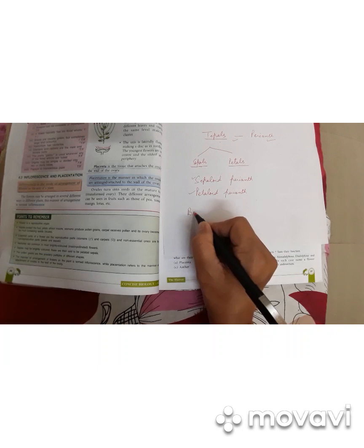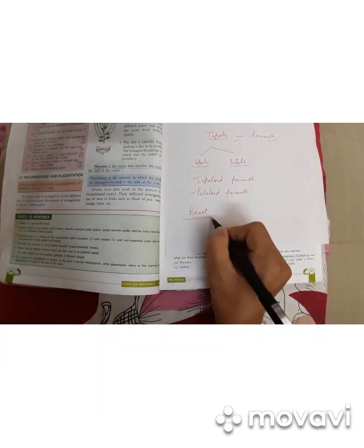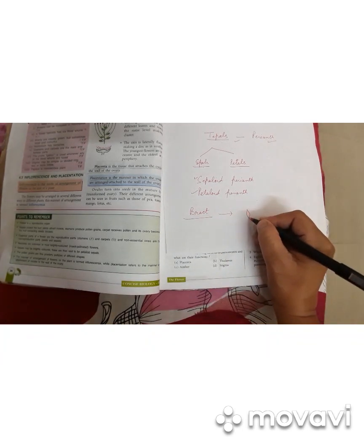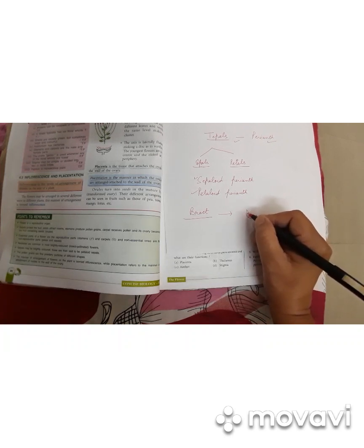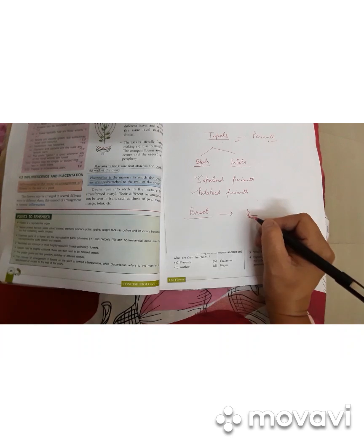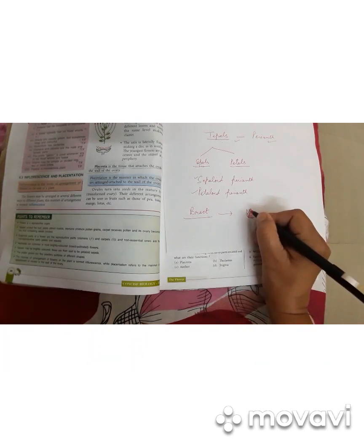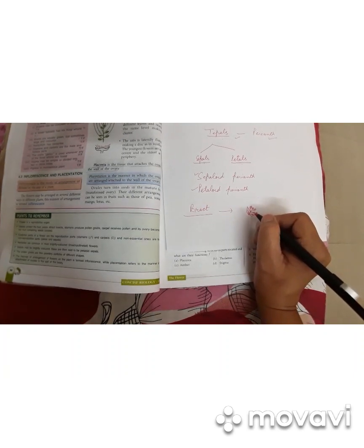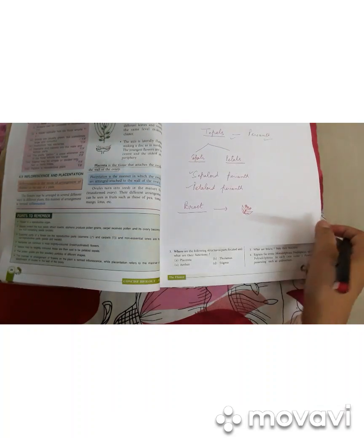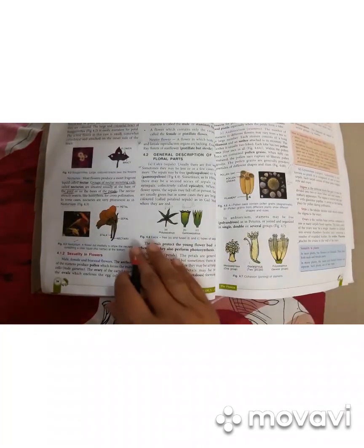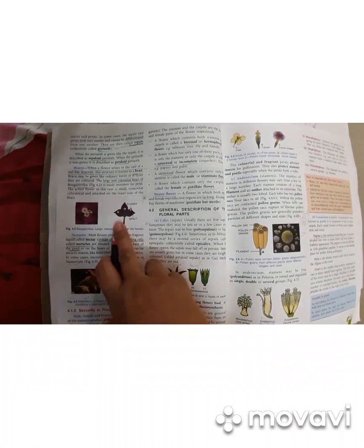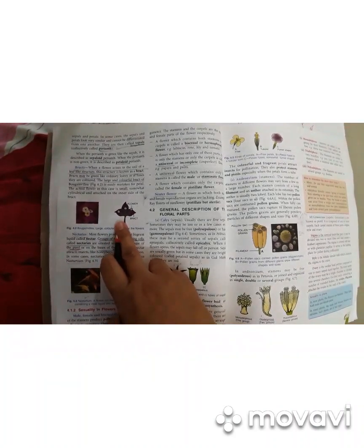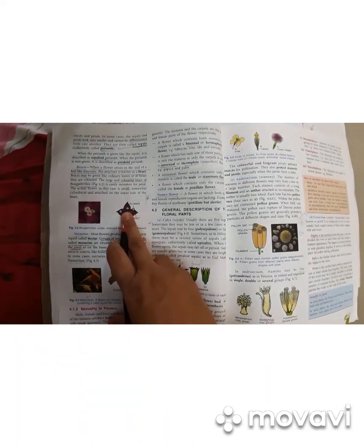The next term is bract. In some flowers, at the axils, there are leaf-like structures — they are not leaves but leaf-like structures — we call them bracts. The flowers arise at the axil of the bracts. These bracts may be green like ordinary leaves or they may be colorful, as in the case of Bougainvillea. The pink, red, or white leaf-like structures you see in Bougainvillea and consider petals are actually bracts, and the flowers are present inside the bracts.